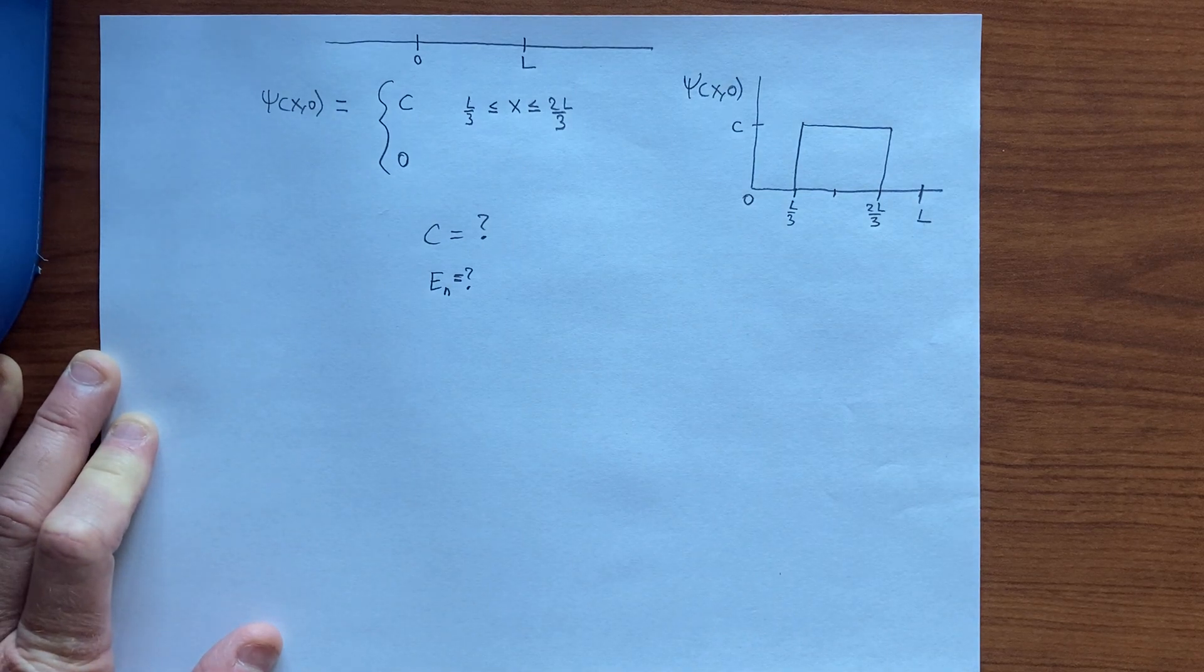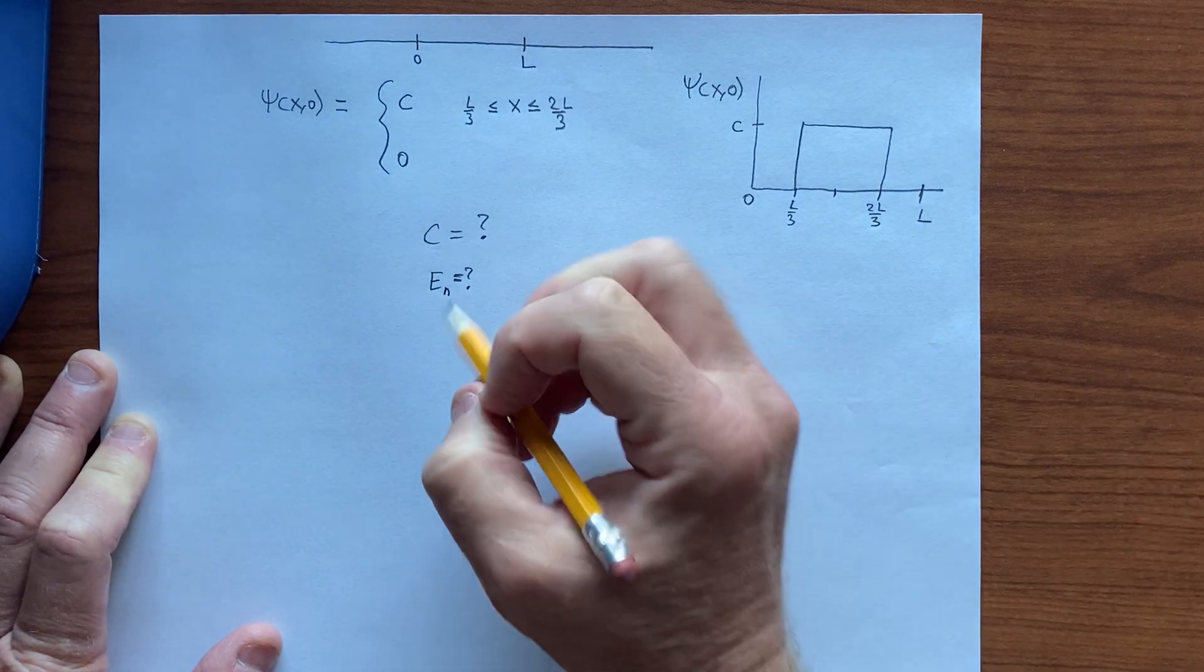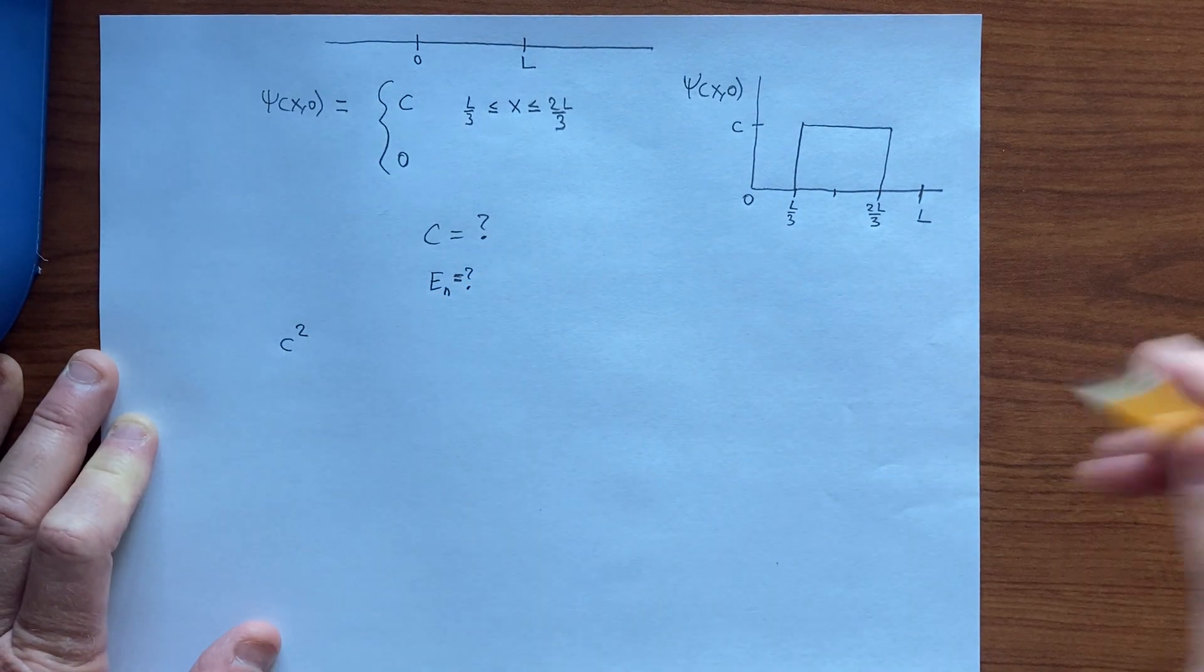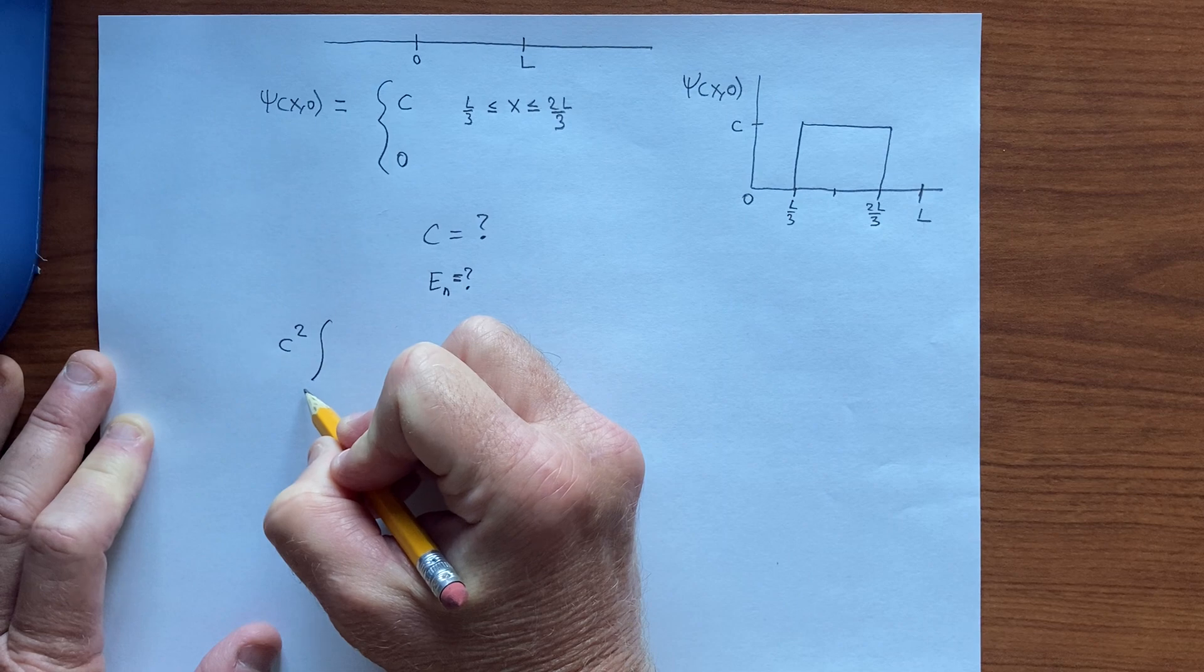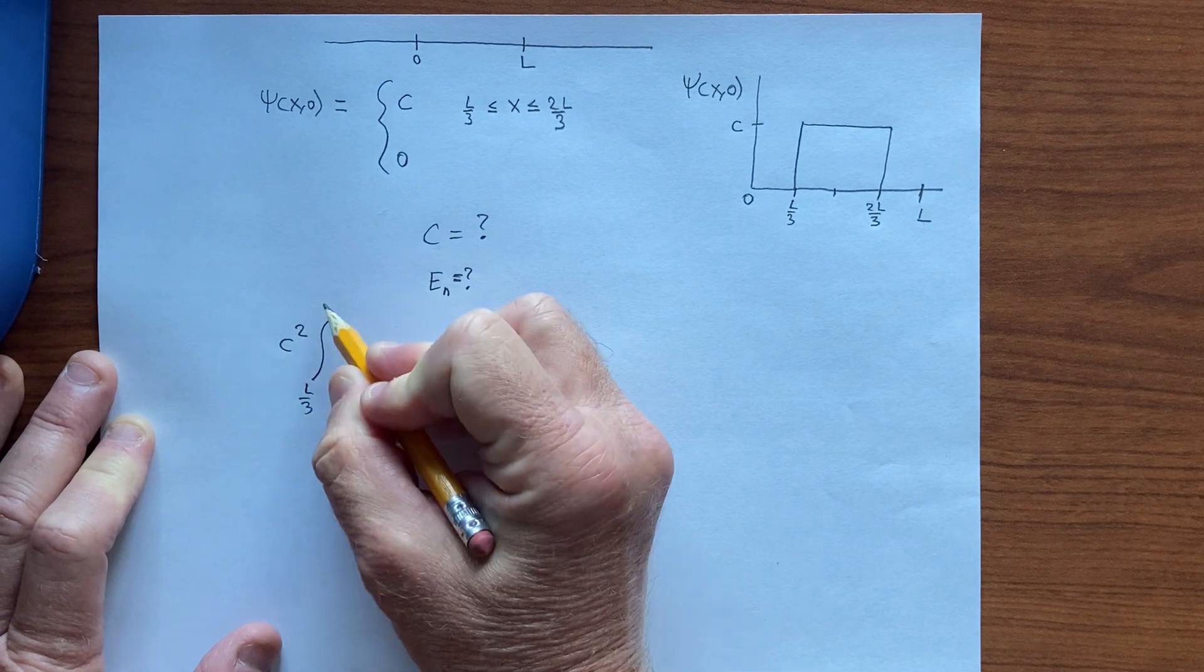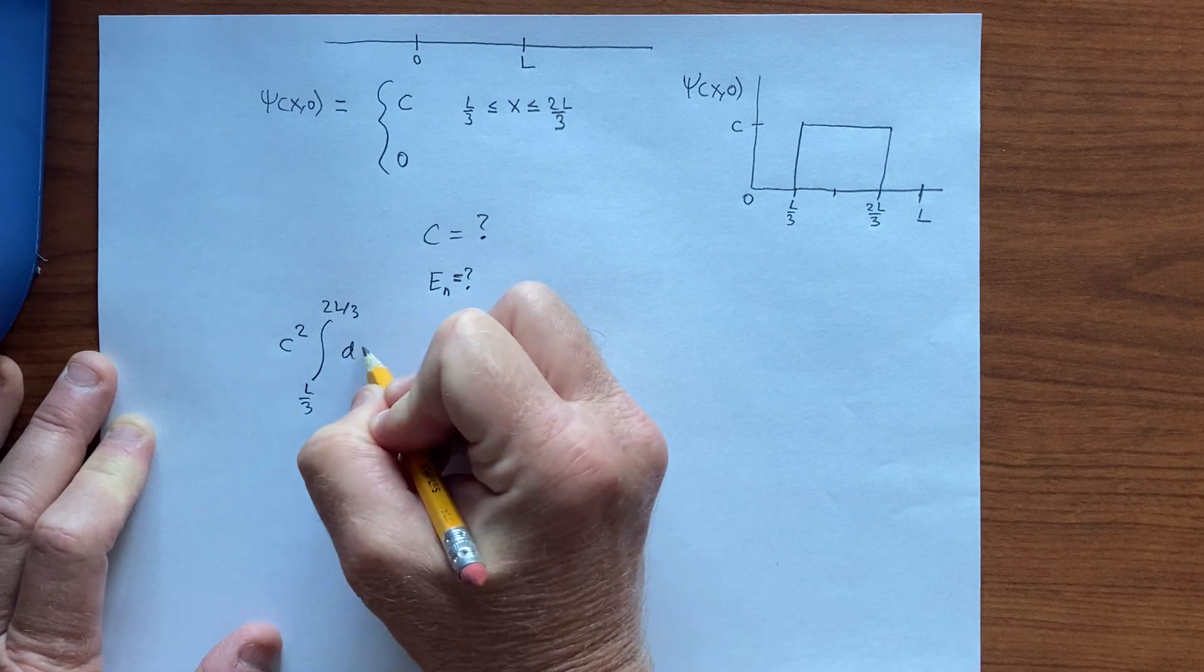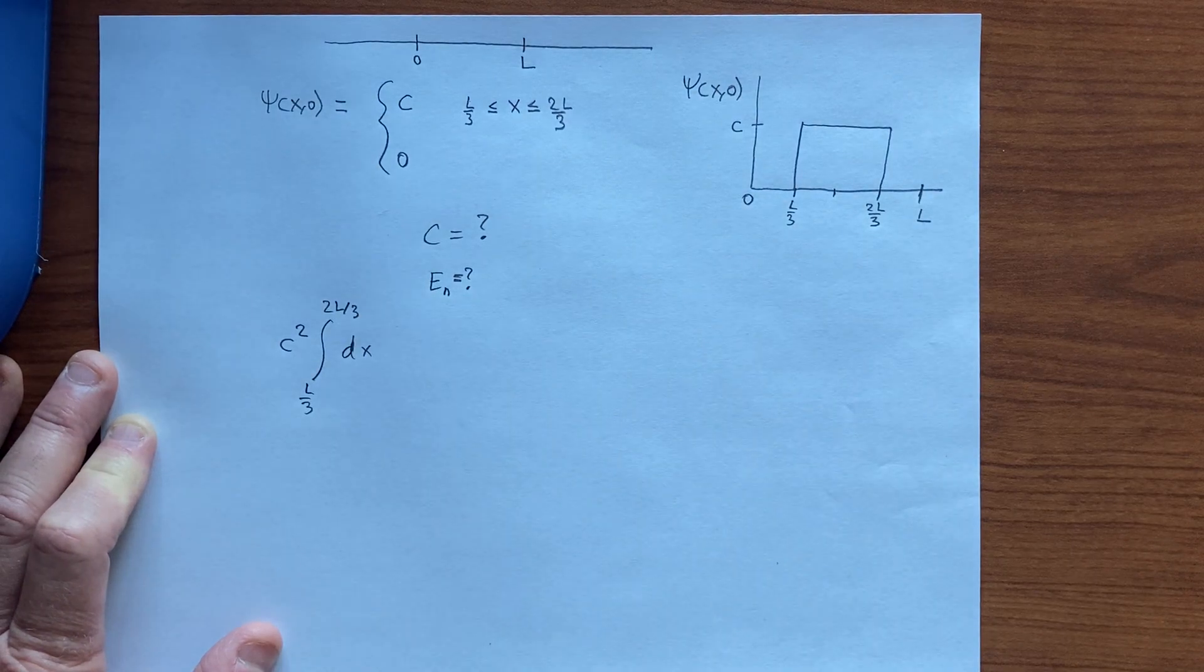So first we have to normalize, so we know that c modulo squared, but that's just c squared because I made c real, so L over 3 to 2L over 3, that's psi modulo squared. If I integrate that, I have to get 1.